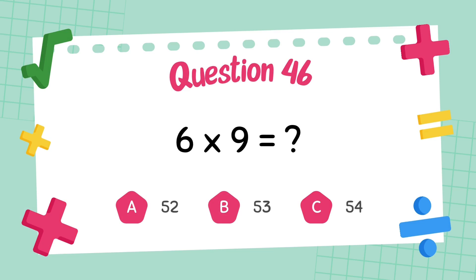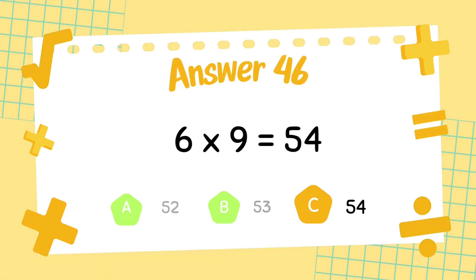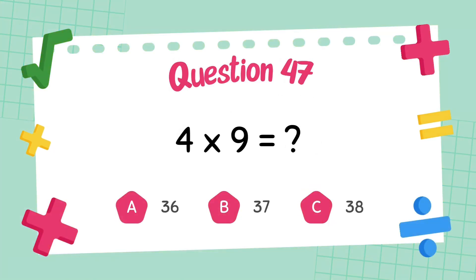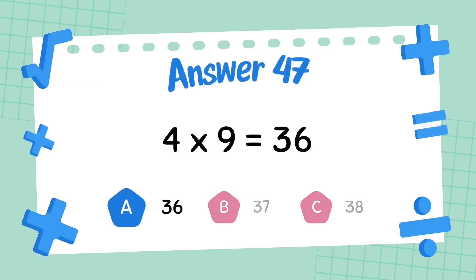What is 6 multiply 9? The answer is 54. What is 4 multiply 9? The answer is 36.